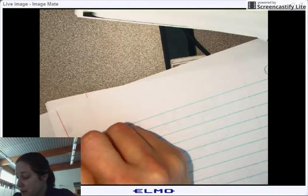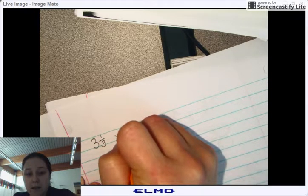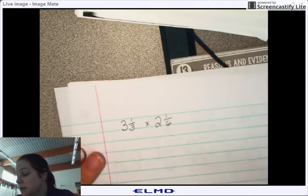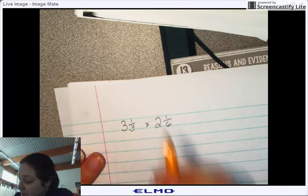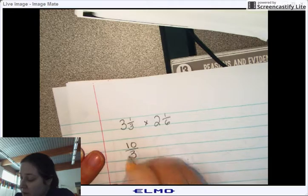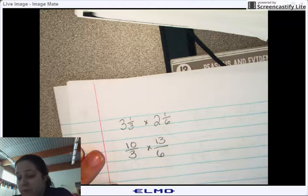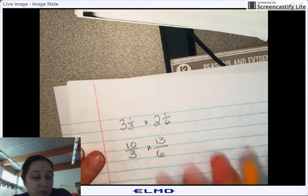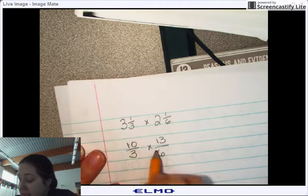Let's look at another one. 3⅓ times 2⅙. I'll turn it into an improper. 10 over 3 times 13 over 6. Now, look here. 3 and 13 cannot be reduced. They're both prime. 3 doesn't go into 13. So therefore, it can't work.